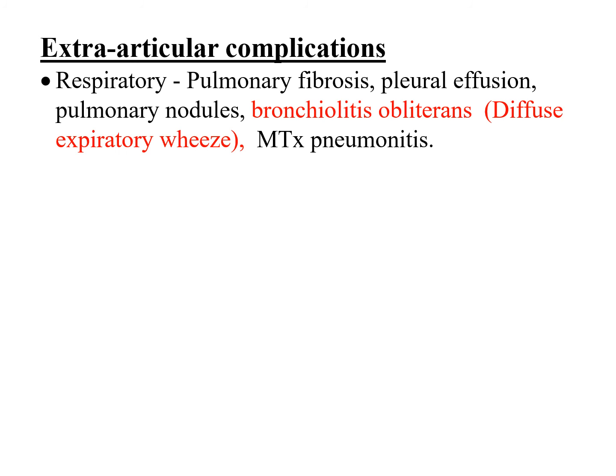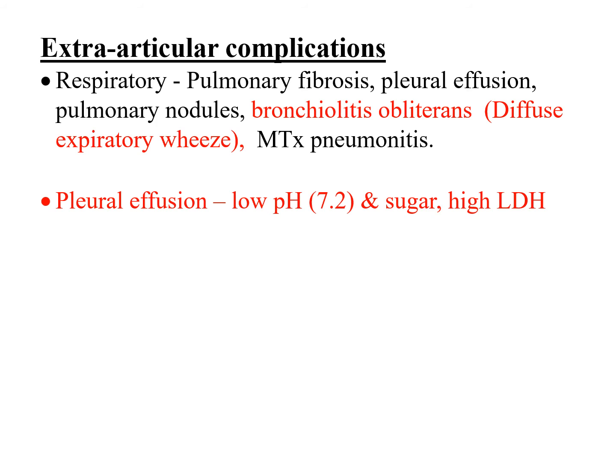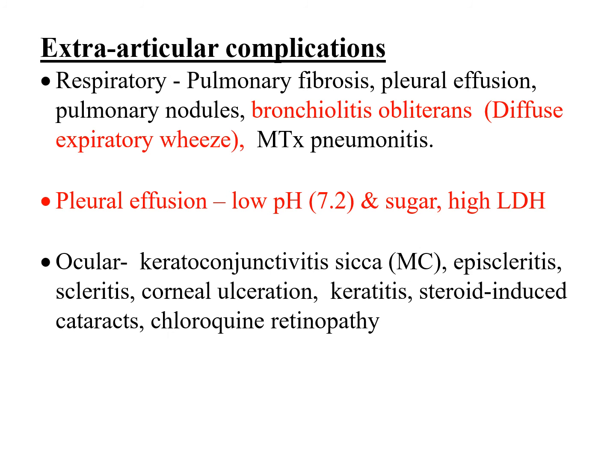In the respiratory system, the most important manifestation is pulmonary fibrosis, which can occur due to rheumatoid arthritis itself or because of methotrexate used in its treatment. If the patient has features such as diffuse expiratory wheeze, the commonest condition associated with rheumatoid arthritis is bronchiolitis obliterans. The characteristic pleural effusion in rheumatoid arthritis has a low pH of less than 7.2, with low glucose and high LDH.